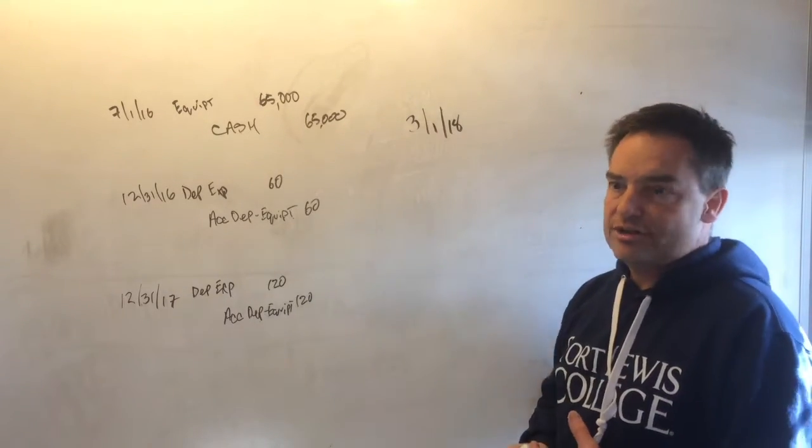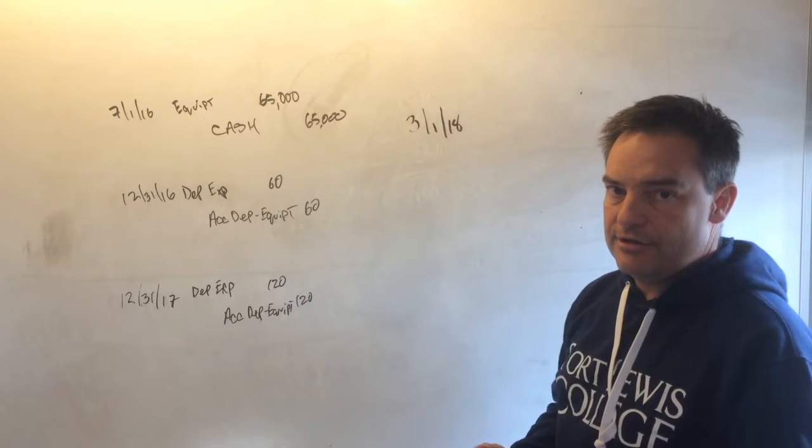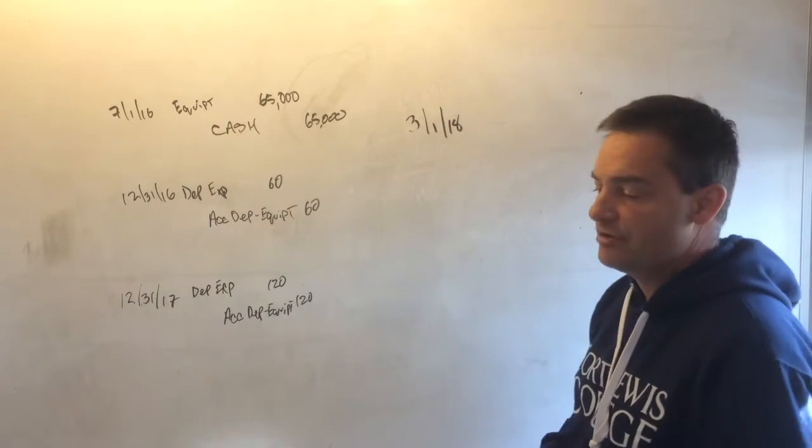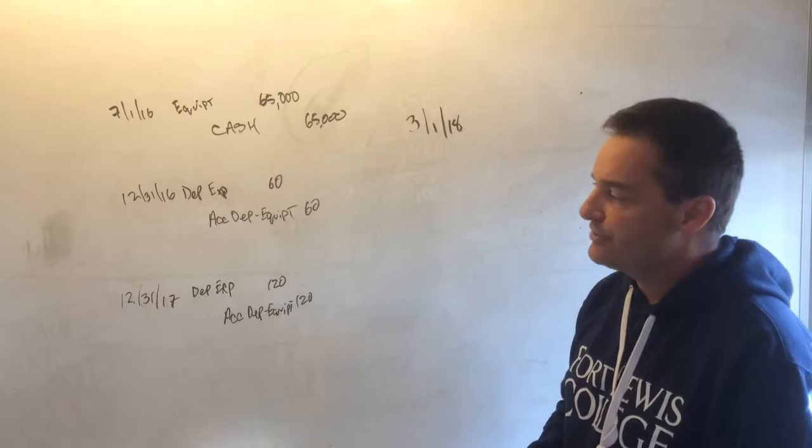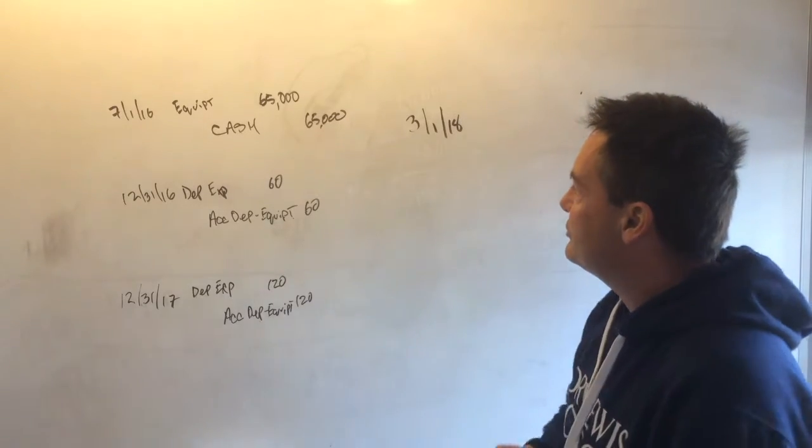There's two journal entries. The first journal entry is to get caught up on the depreciation, and a second journal entry would be to record the sale. So you go out on March 1st, 2018.